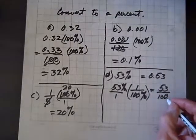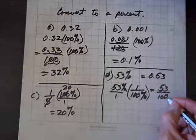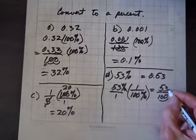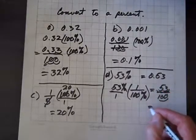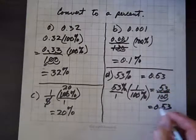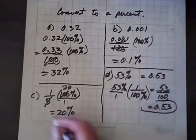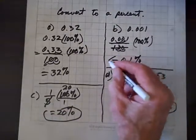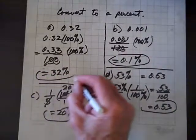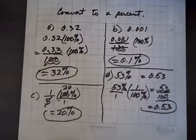Now, if we move this decimal over twice, then we have to move this decimal over twice, and we get 0.53. And that's where that came from. I'd better circle these answers. So, anyhow, we converted to percents.